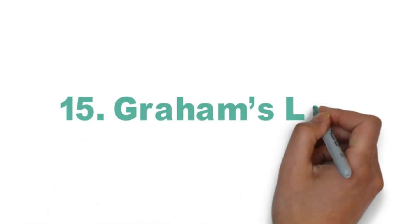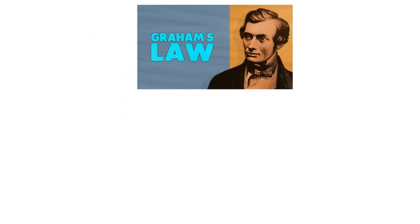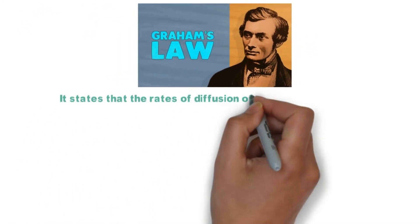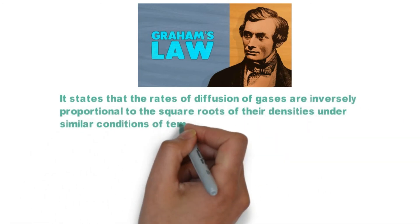Graham's Law. It states that the rates of diffusion of gases are inversely proportional to the square roots of their densities under similar conditions of temperature and pressure.